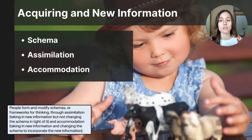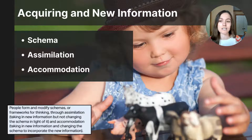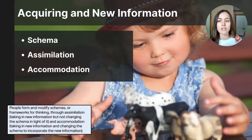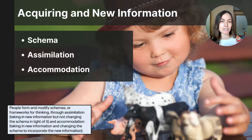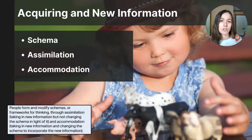Assimilation happens when new information fits into what you already know — it fits nicely into your existing schema without having to change it. For example, if the child visits a farm and sees horses, knowing that a farm contains animals, the child might add horses to their schema of farm animals. Accommodation occurs when new information doesn't fit with the existing schema, so you're forced to change or modify it. As the child learns that some farms only grow crops and don't have animals, they will need to adjust their idea of what a farm can be. This mental process is called accommodation.